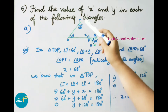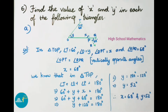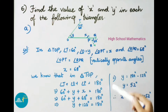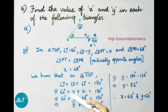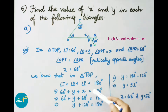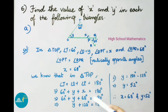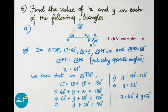We know that in triangle TOP, the sum of interior angles equals 180 degrees. Therefore, angle T plus angle O plus angle P equals 180 degrees: 60 degrees plus y plus x (68 degrees) equals 180 degrees. That gives y plus 128 equals 180, so y equals 180 minus 128, which is 52 degrees. Therefore x equals 68 degrees and y equals 52 degrees.